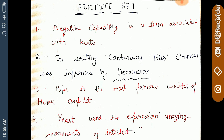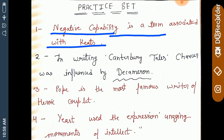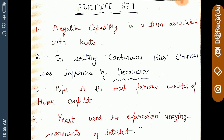Negative capability is a term associated with Keats. It is a literary term first used in 1817 by Keats. Negative capability is one of the important literary phrases.